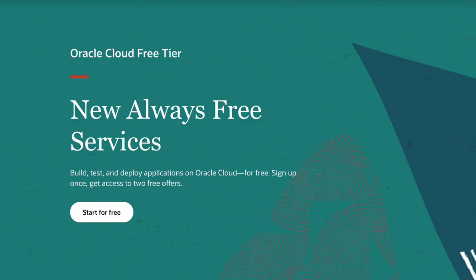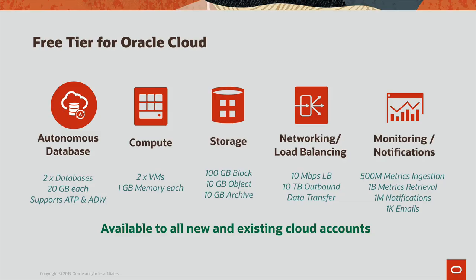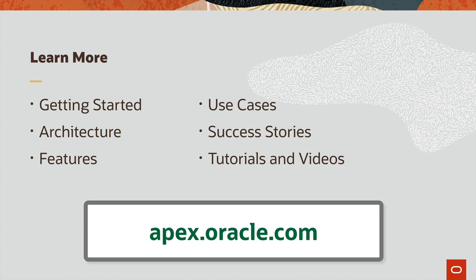So how do you get started? The new always-free cloud service from Oracle runs on Oracle Generation 2 Cloud — it's perpetually free, and you get two databases at 20 gigabytes each supporting both autonomous transaction processing and autonomous data warehousing, two VMs with 1 GB memory each, 100 GB of block storage, 10 GB of object and archive storage, networking, load balancing, notifications, and emails. Sign up at oracle.com/free. To learn more about APEX — getting started material, tutorials, videos, success stories, use cases — visit apex.oracle.com.